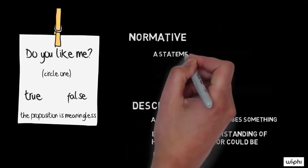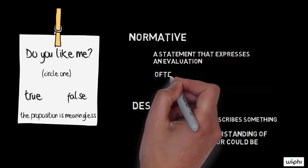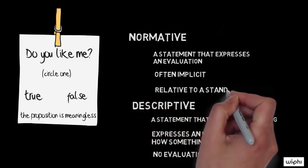When you make a normative claim, you express your evaluation of something. When you evaluate something, you're assessing it, often implicitly, relative to some standard or ideal or alternative way that it could be.